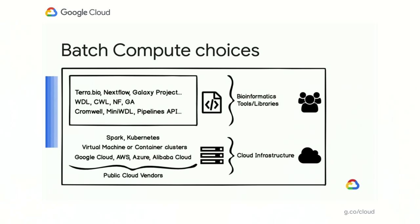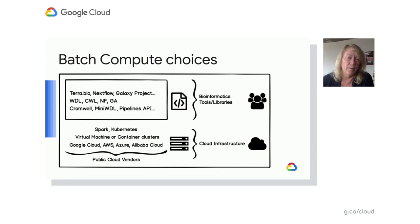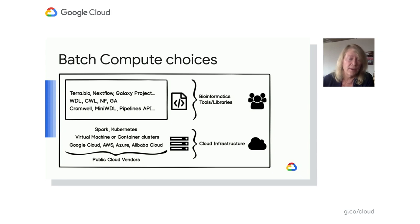Those libraries have associated languages such as WDL, CWL (Common Workflow Language), Nextflow, NF, or GA. And those tools often have orchestration layers such as Cromwell for Terra.Bio or MiniWDL. Pipeline's API is actually a Google API that works in conjunction with a lot of these higher level libraries. There's a lot of different tools and libraries to understand. It's one of the reasons I made this course — to break all these services into parts and pieces so that they can be learned individually and then combined effectively.